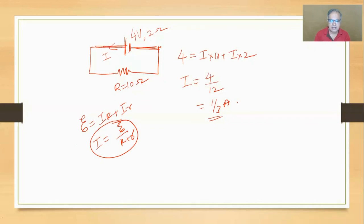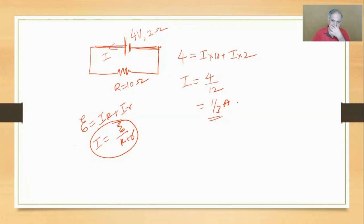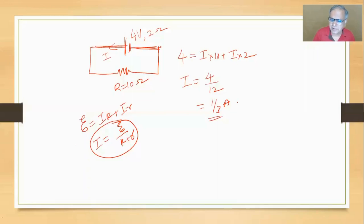Now one question. A cell has EMF of 4 volts and internal resistance of 2 ohms. An external resistance of 8 ohms is connected across the terminals of the cell. Find the terminal PD. Current I = 4 / (8 + 2) = 4/10 = 0.4 amperes. Terminal PD = I × R = 0.4 × 8 = 3.2 volts. Check: Ir = 0.4 × 2 = 0.8 volts. And 0.8 + 3.2 = 4 volts, which equals the EMF. Correct.